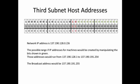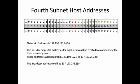The third subnet has a base address of 137.190.128.0/26. By manipulating those bits, the host addresses range from 137.190.128.1 to 137.190.191.254, and the broadcast address is 137.190.191.255. The fourth and final subnet is 137.190.192.0/26, with host addresses from 137.190.192.1 to 137.190.255.254 and a broadcast address of 137.190.255.255.